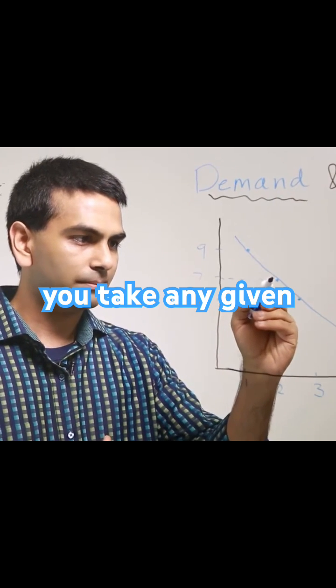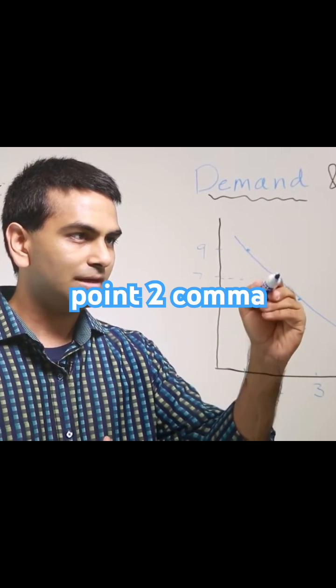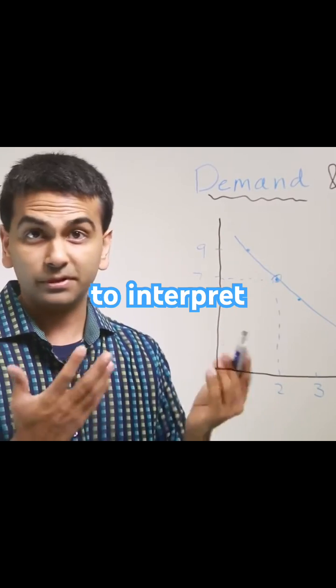So what that means is if you take any given point, let's say this point two comma seven, there's actually two different ways to interpret this point.